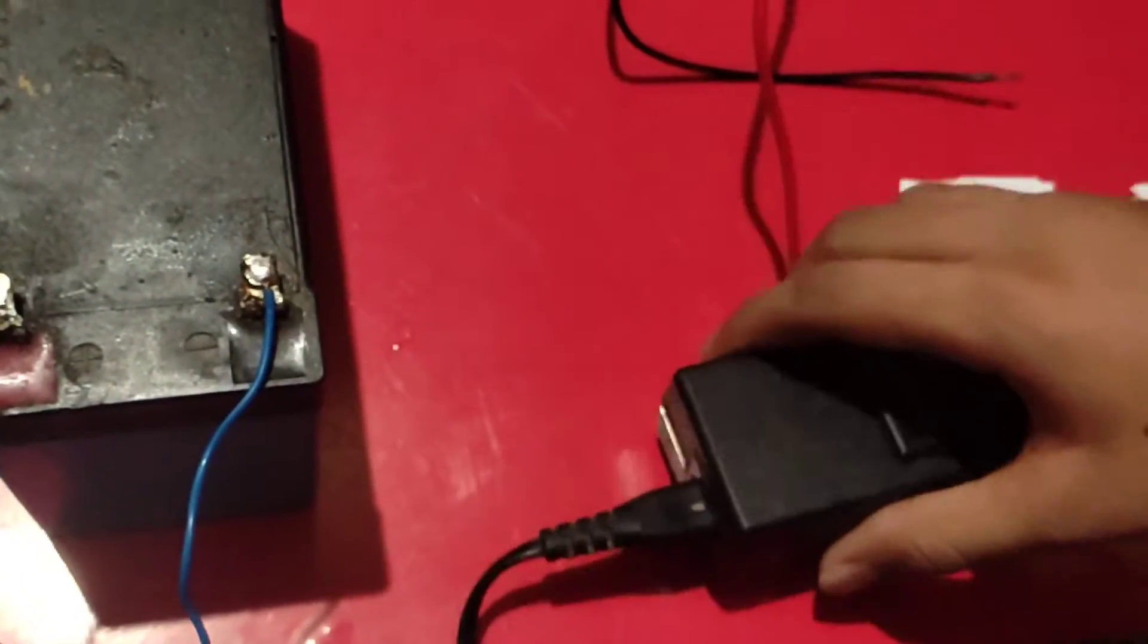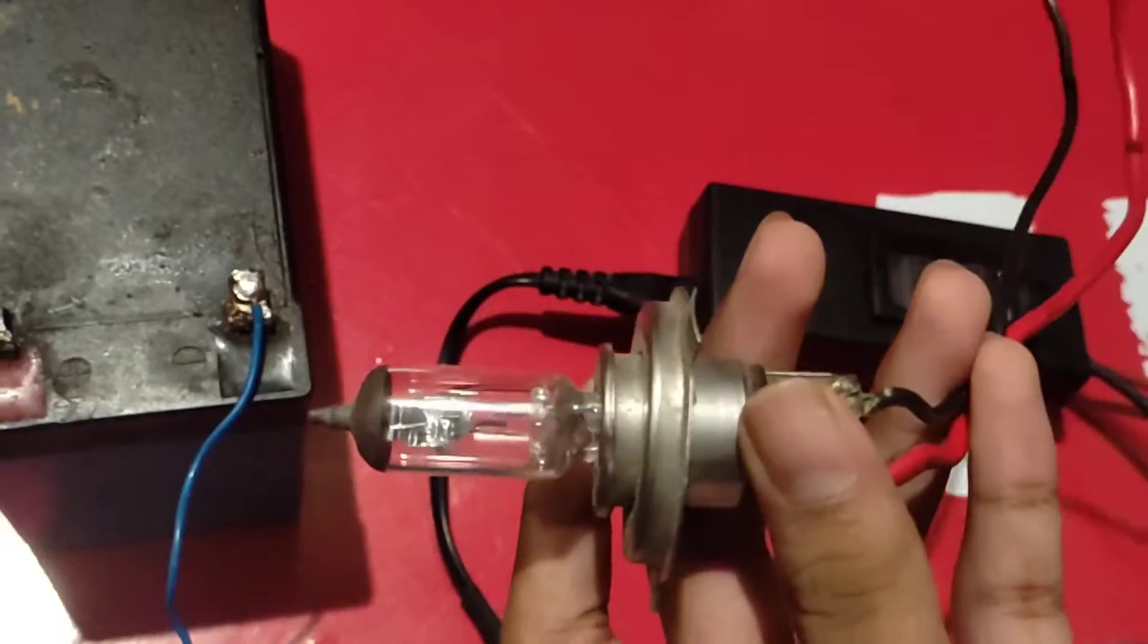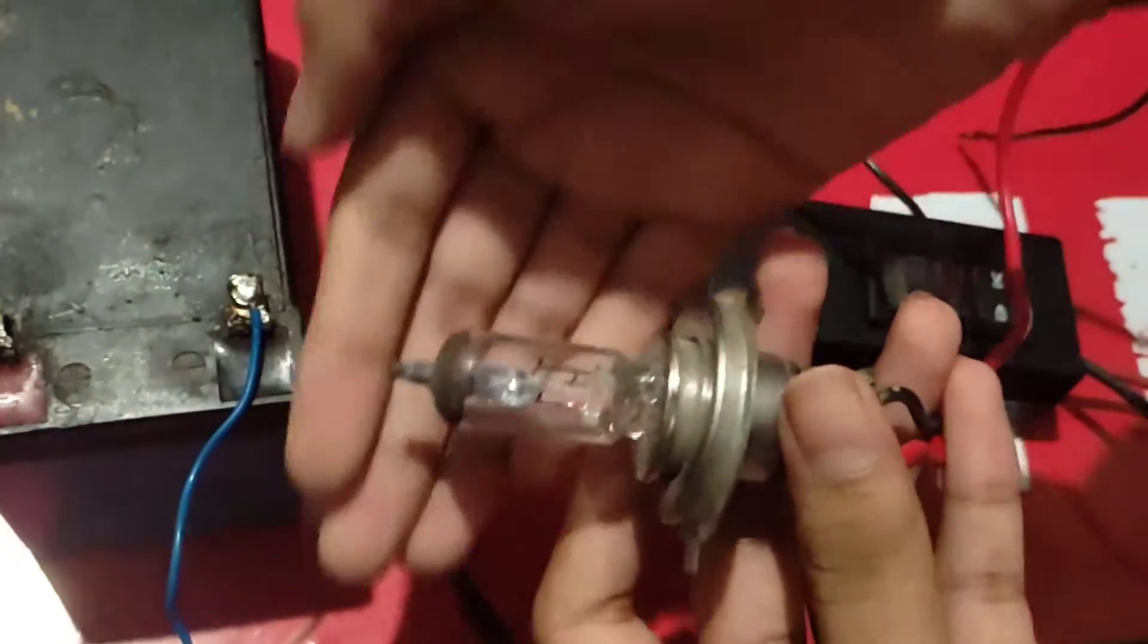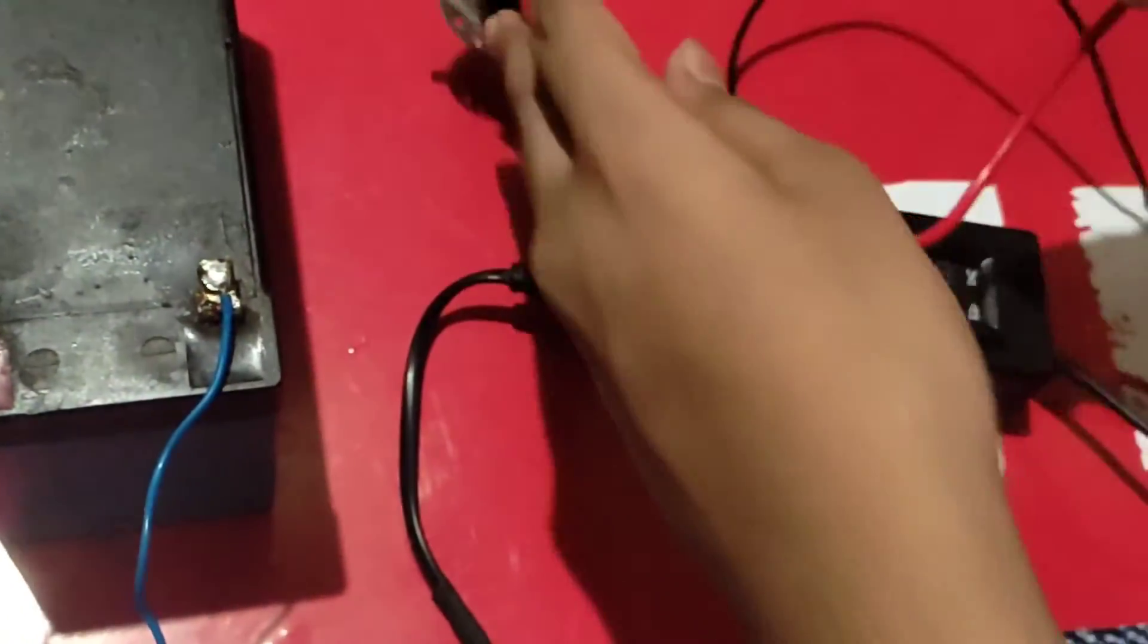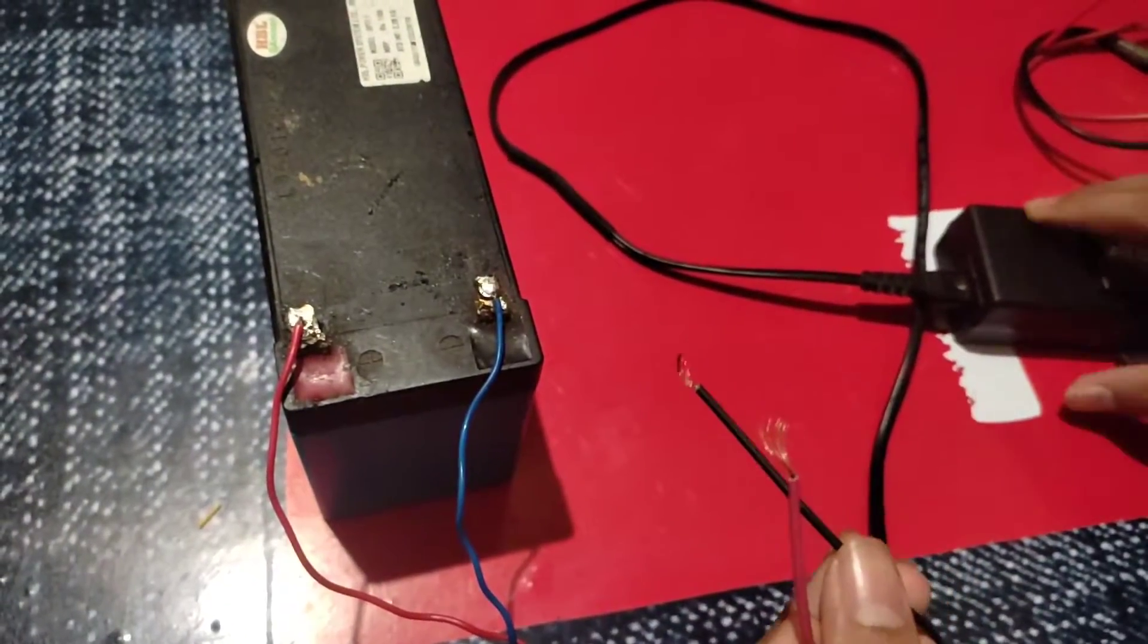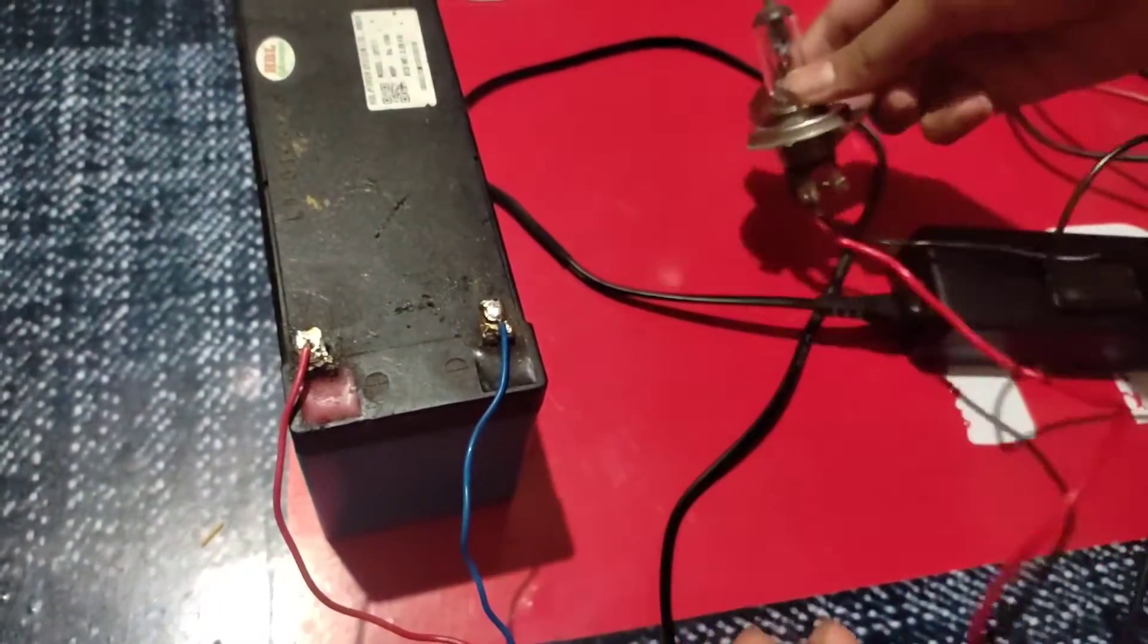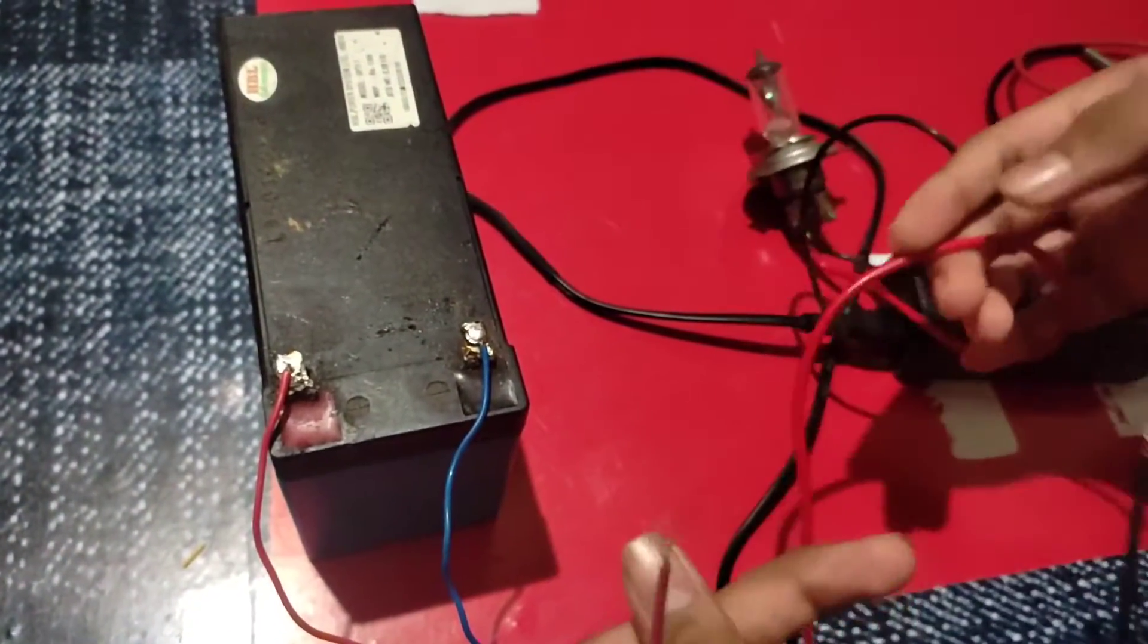Now I am going to add a bulb to this battery and then how much the bulb takes it will show you. You can see this is the bulb. Now I will connect this bulb to the load wires that we got from the multimeter.